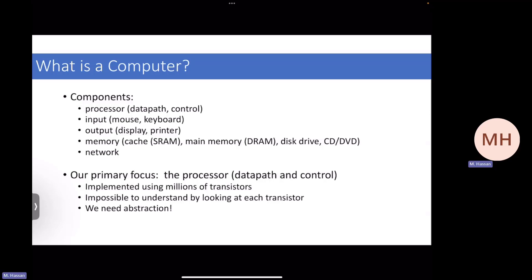So what is a computer? We already discussed what we're going to cover in the course, because this is our interest in 4DM4. There is a processor in a computer, there are input-output devices, there are memories, and there is usually a network. This network can be an interconnect within the chip, or even a network outside of the chip — for example, connectivity to Wi-Fi, Ethernet, or a local network. So there is a network in the macro or micro definition.